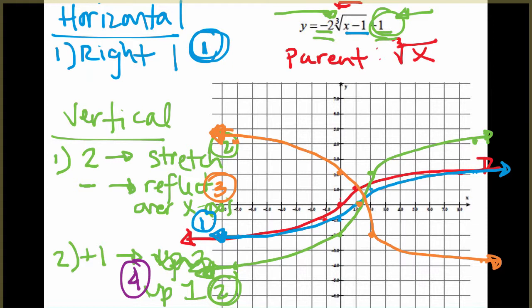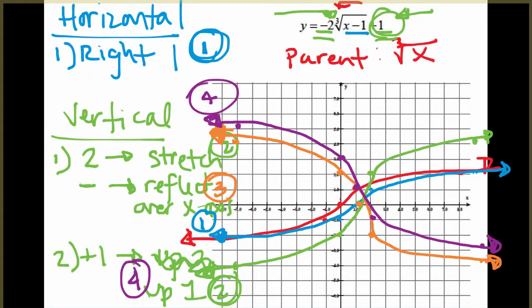Our final step is to shift this orange graph up 1. I use the key points I've been using to get the general shape. Our final graph is this purple graph, labeled 4. You'll notice that if we had done the vertical transformations in the opposite order, we would have gotten a completely different graph. So you have to make sure you pay attention to the order of those transformations.